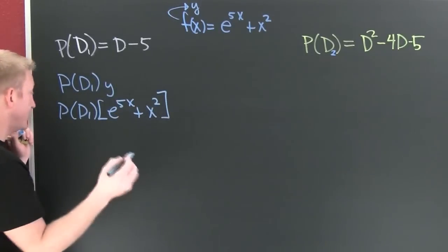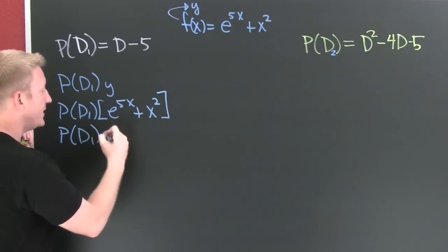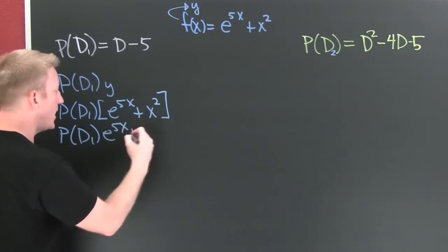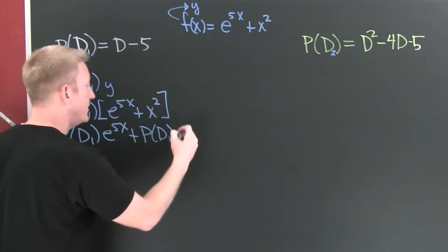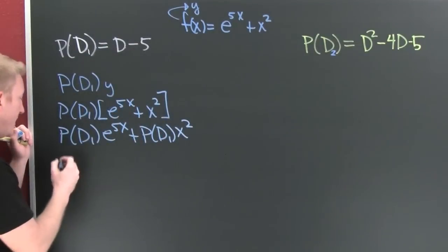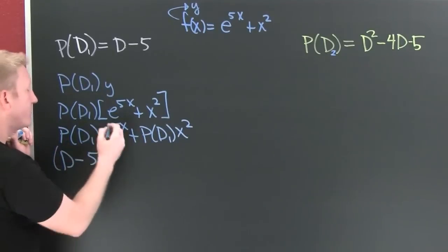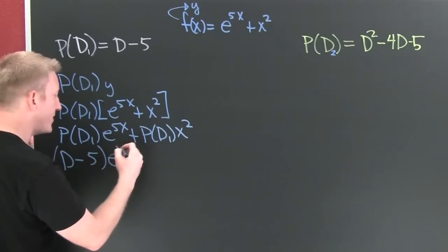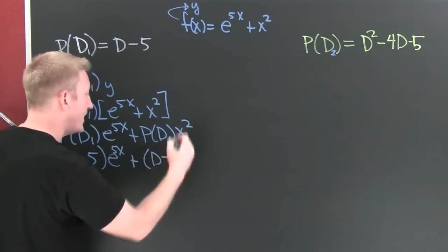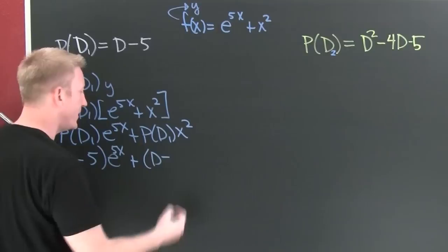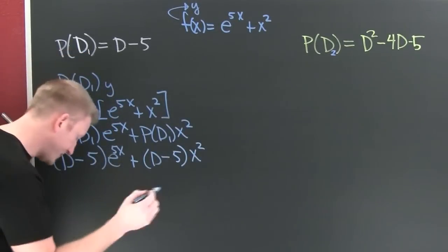It has that distributed property. We're looking at PD1 acting on e to the 5x plus PD1 acting on x squared. What was PD1? It was one derivative minus five times the function: e to the 5x and one derivative minus five acting on x squared.